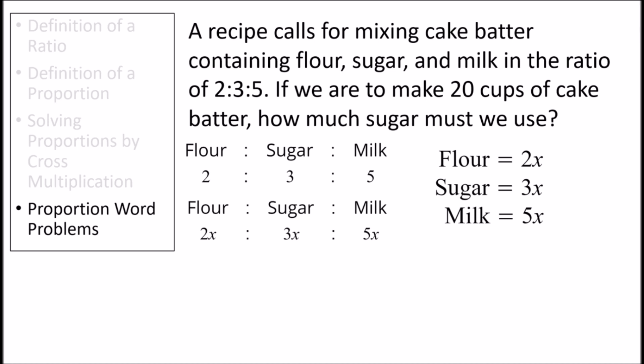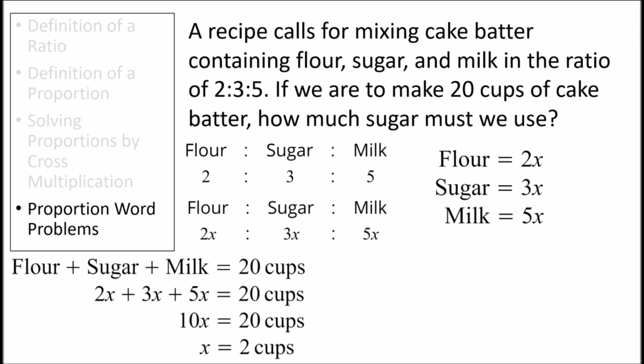Next, the question tells us that we are to have 20 total cups of cake batter. So, if we add the flour, sugar, and milk together, we'll get 20 cups of cake batter. Let's plug in the 2x, 3x, and 5x for the flour, sugar, and milk, and then solve for x. This gives us x equals 2 cups.